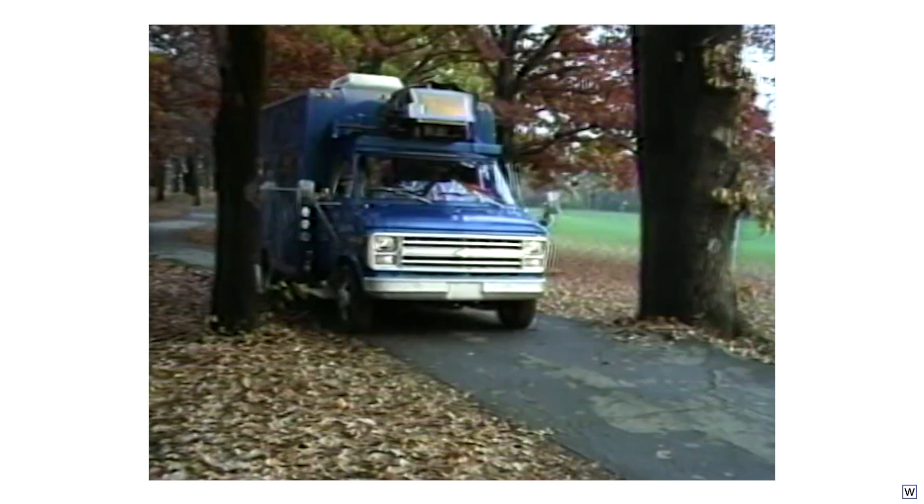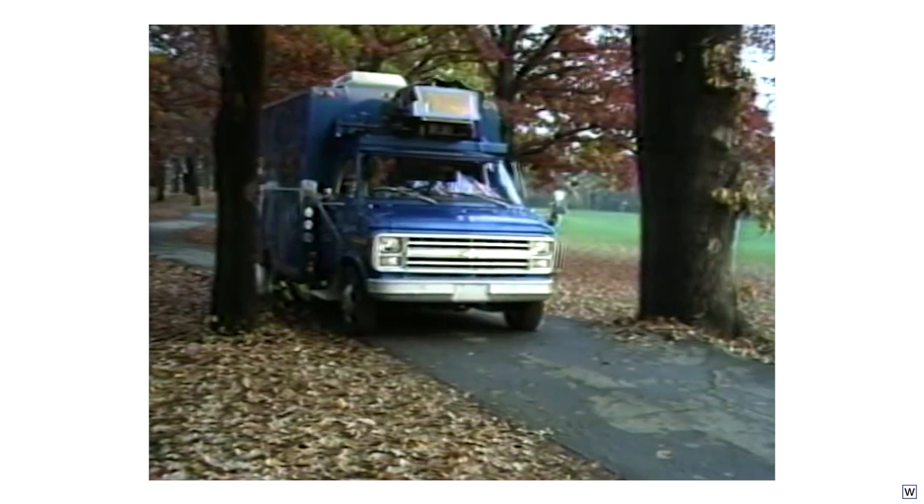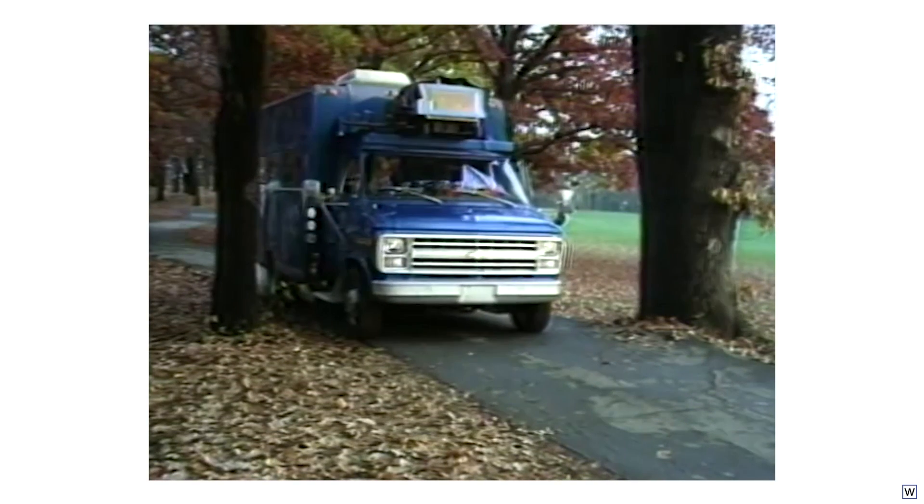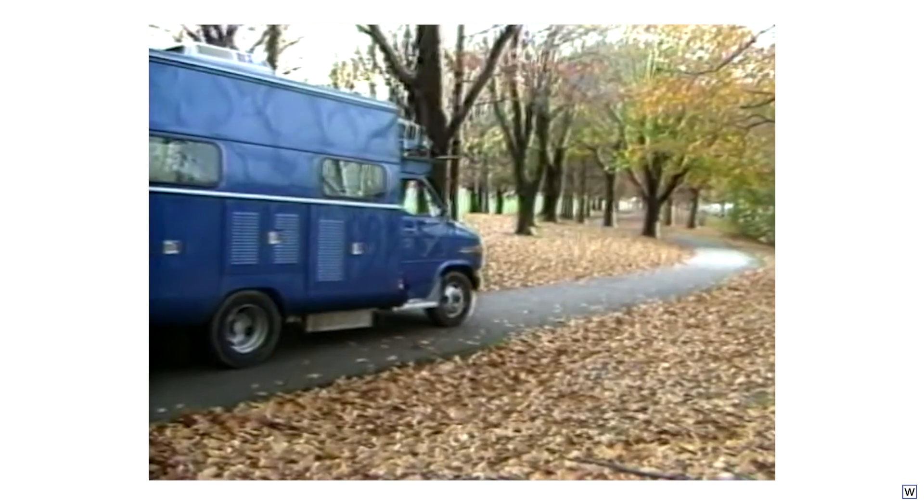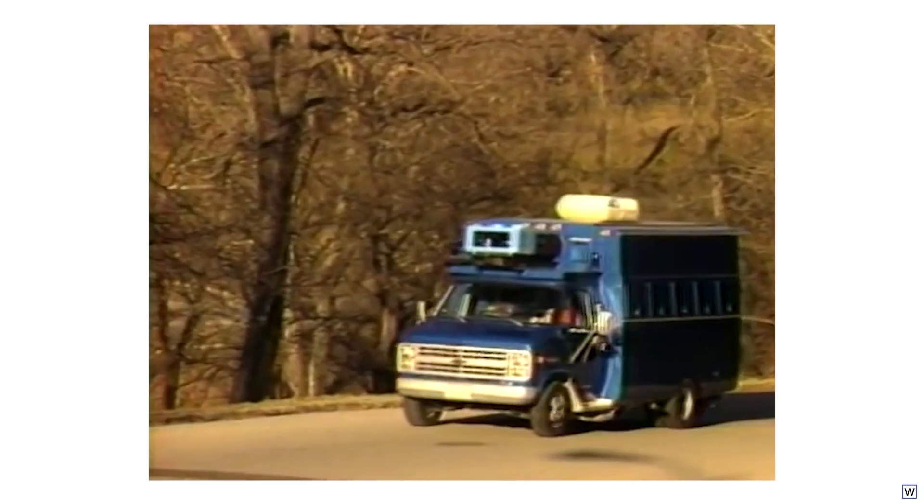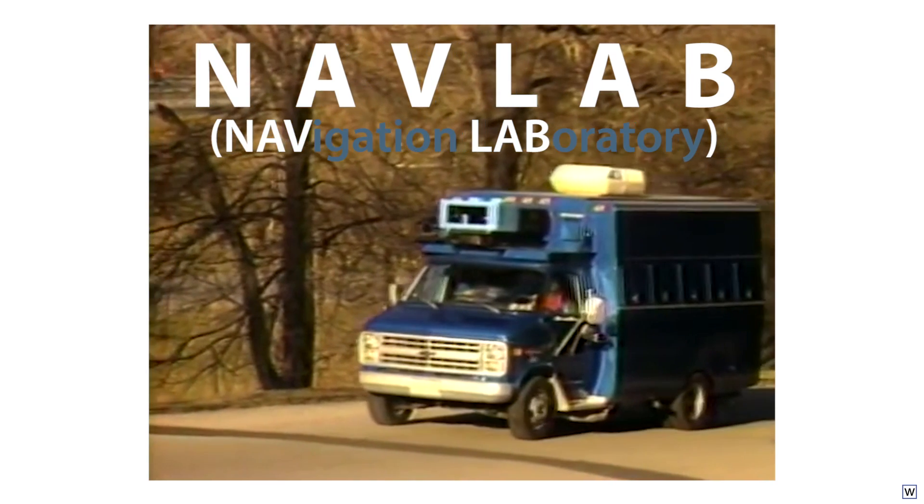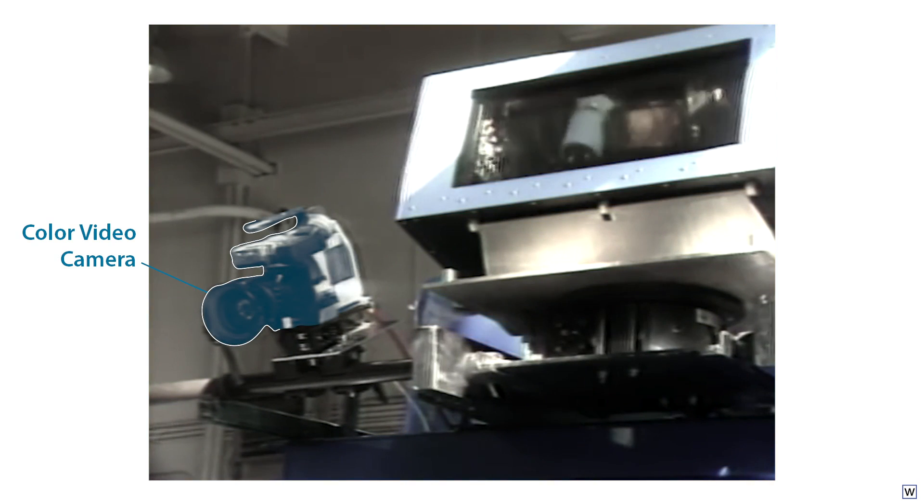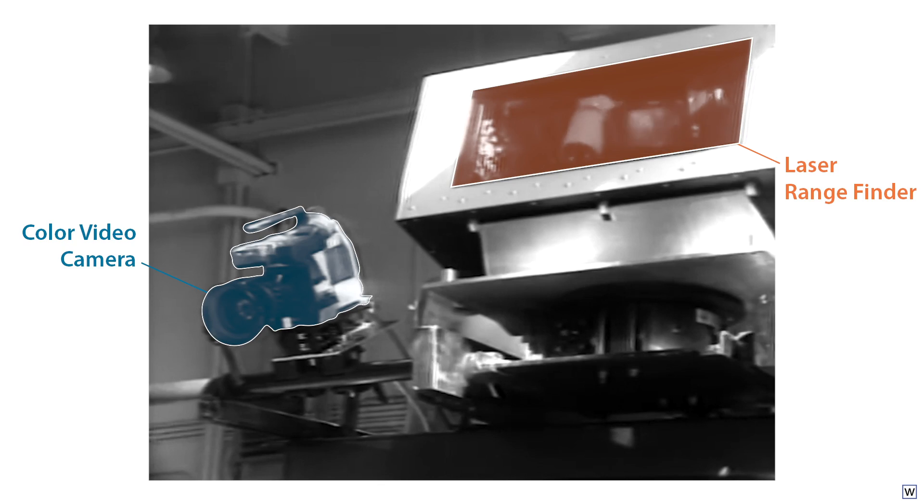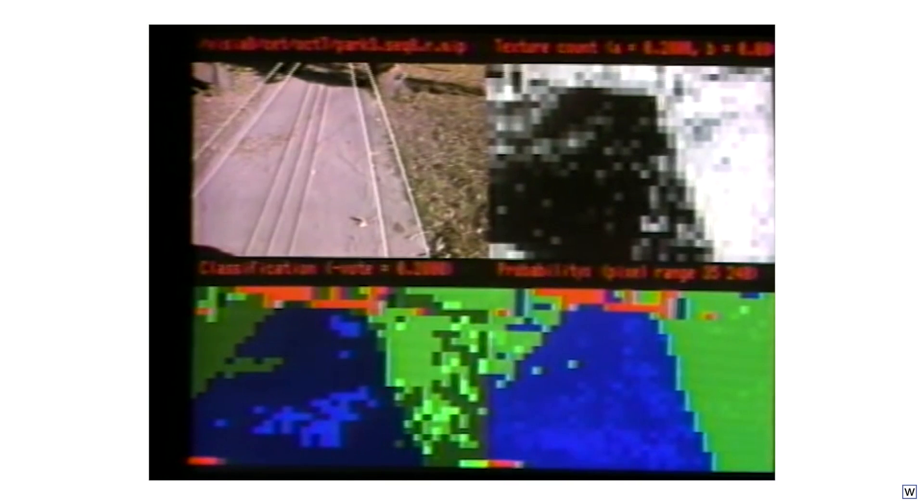In 1986, a couple years after the start of the autonomous land vehicle project, Carnegie Mellon built its own autonomous test vehicle, a retrofitted Chevy van they called NavLab. Just like the ALV, NavLab included a roof-mounted color video camera, and CMU researchers experimented with a variety of vision algorithms.